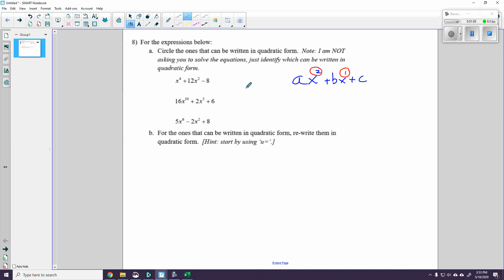So let's take a look at these expressions over here and see which of them might be quadratic. Well, four is two times the middle power of two, so this can be written in quadratic form. Ten is two times the middle power of five, so that can also be written in quadratic form. Six is three times the middle power of two, so this one cannot be written in quadratic form.